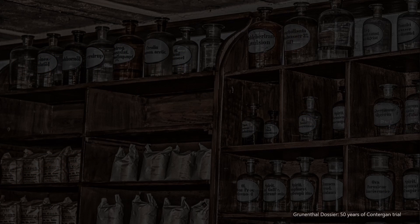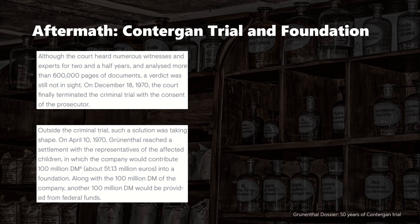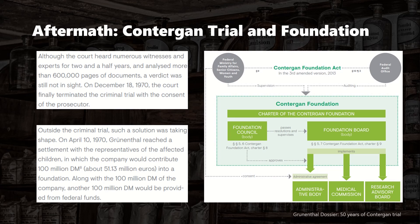The aftermath of thalidomide entailed a large criminal trial examining potential negligent behavior by leading Grünenthal employees. The process was extremely drawn out — 6,000 pages of documents without any clear verdict. Ultimately, it was said that based on the state of science at the time, the teratogenic effects of thalidomide could not have been anticipated, so the trial was terminated and settled. The company is still providing support to affected individuals through a foundation with more than a hundred million euros contributed to date.